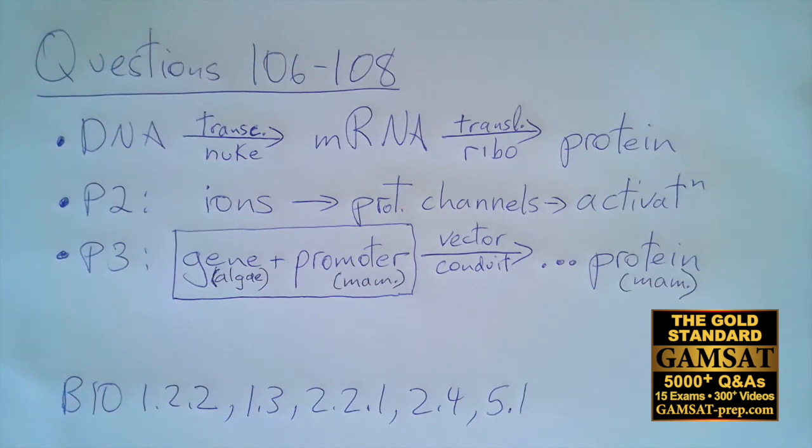However, hyperpolarization does not activate a neuron. It does the opposite. It makes it less likely that the neuron would be activated. And we are told from the outset that this is a condition of activation. So we must assume that in these other organisms, the process occurs differently. And so for 106, the answer is A.